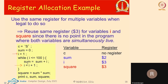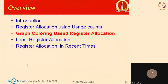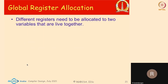Any other questions? Let's move on. If we want to do global register allocation — considering variables at the level of a function or a region beyond a basic block — what mechanisms can we use?